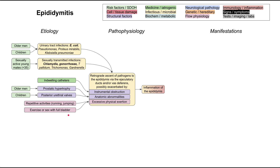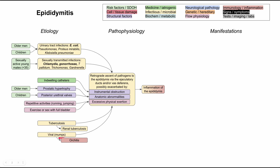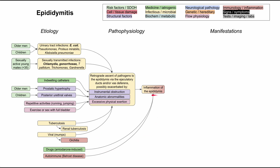There are a few more etiologies. You can have tuberculosis epididymitis, usually in the context of renal tuberculosis. There is also viral epididymitis, typically caused by the mumps virus, which is usually also present with orchitis — inflammation and infection of the testicle. Lastly, some non-infectious etiologies go directly to epididymitis, bypassing the retrograde ascent mechanism. These include drugs such as amiodarone most prominently, and autoimmune diseases like Behçet's disease.